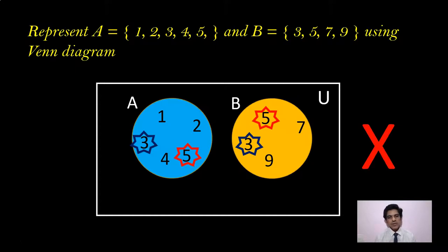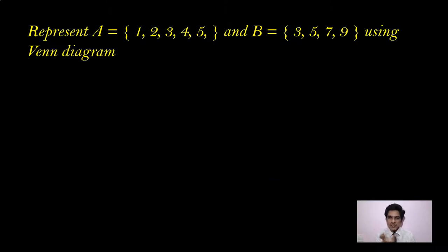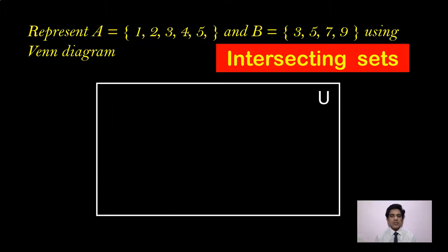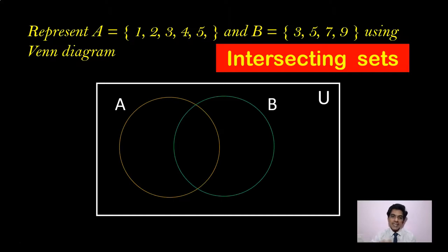This is not the correct way to represent these two sets, because you cannot repeat elements. That is why we look at set A and set B — do they have any common elements? The common elements are 3 and 5. Sets with common elements are called intersecting sets. Sets with no elements in common are called disjoint sets. You have to draw circles so that they intersect with each other.